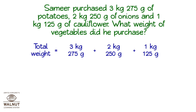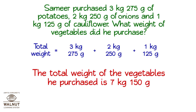But as this is a word problem, just that much is not enough. Let's go back to the question — what did we have to find? The total weight. So we have to write the answer in a sentence with units. The total weight of the vegetables he purchased is 7 kilograms 150 grams. And that is how we write the final answer.